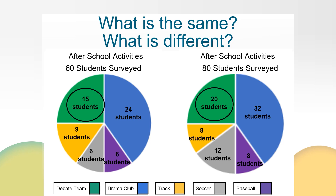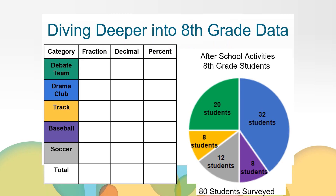Let's take a deeper look at the circle graph representing 8th grade students. This time we know the number of students that participate in each activity. Let's use that information along with what we know about rational numbers to find the percent of students in each activity. I'll start with the debate team since I can see it represents one fourth of the circle graph. 20 out of 80 students participate in the debate team. I can divide the numerator and denominator by 20, simplifying the fraction to one fourth. One fourth is equivalent to 25 hundredths, which represents 25% of the circle graph.